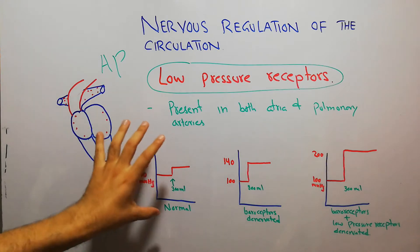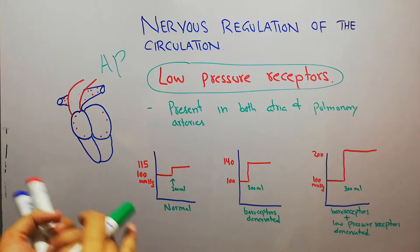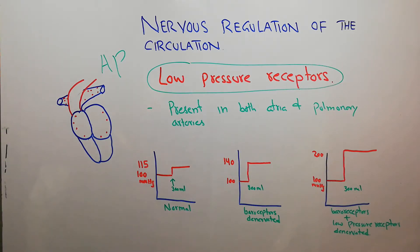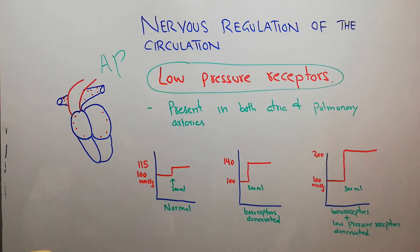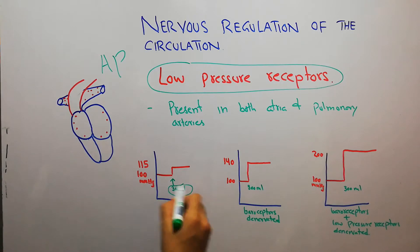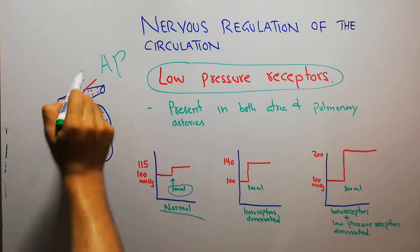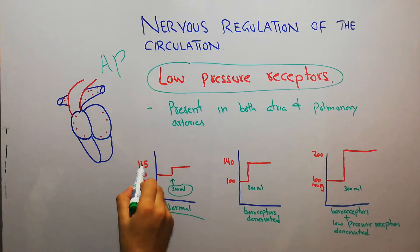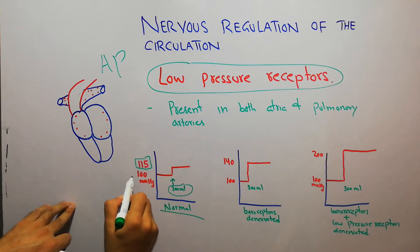Suppose, for example, this is a normal dog. As an experiment, we have taken a dog with normal baroreceptors — the arterial receptors present in the carotid arteries and the aortic arch, which we have discussed in detail in the previous lectures. This dog has normal baroreceptors and normal low pressure receptors. This dog is injected with 300 ml of IV fluid, with both normal baroreceptors and normal low pressure receptors in the atria and pulmonary arteries.